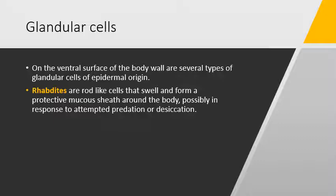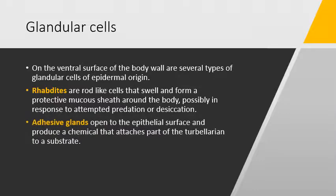And second one is preventing desiccation. There are three types of glandular cells found in the Turbellaria: rhabdite, second one is adhesive gland. As the name indicates, it secretes some sort of chemical that is adhesive in nature and helps in adhesion of the organism or animal to the substrate.